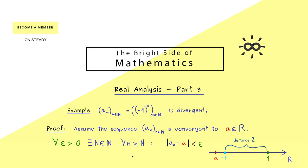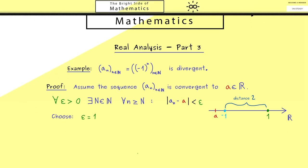Now the idea is that we have to choose the epsilon so small that in the epsilon neighborhood around a we don't have -1 and 1 at the same time. This means we need a number smaller or equal than 1, so let's choose 1.